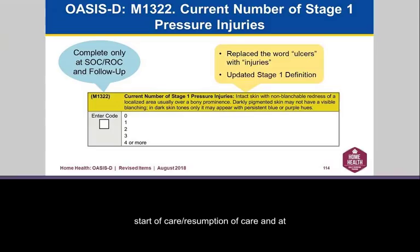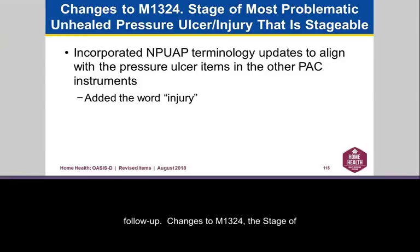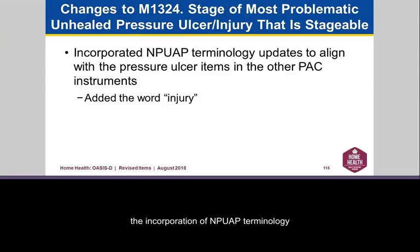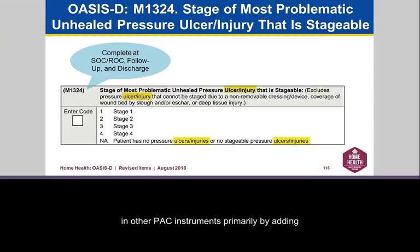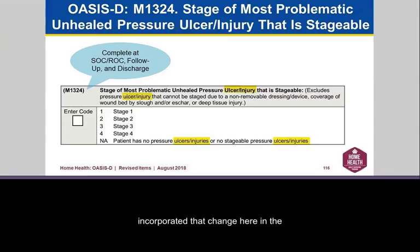Changes to M1324, the stage of the most problematic unhealed pressure ulcer injury that is stageable, primarily dealt with incorporating NPUAP terminology updates to align with other PAC instruments — primarily by adding the word 'injuries.' That change is reflected in the language of the measure. This is completed at start of care, resumption of care, follow-up, and discharge.